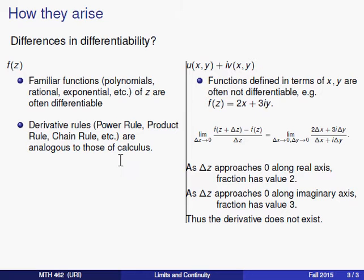On the other hand, you saw an example yesterday, and you'll see other examples in the text of functions that are not differentiable, and these functions that are not differentiable often have the form where they are defined in terms of x and of y. So instead of saying something like f of z equals z squared, we'll have f of z equals 2x plus 3iy. So we have a real part and an imaginary part defined not in terms of z, but in terms of the real and the imaginary parts of z.